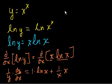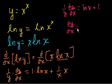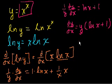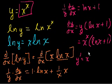Simplifying: we get (1/y)·(dy/dx) equals ln(x) plus 1, since x times (1/x) cancels to 1. Multiplying both sides by y, we get dy/dx equals y times (ln(x) plus 1). Substituting back y equals x to the x, we get dy/dx equals x to the x times (natural log of x plus 1), which we can also write as x to the x times ln(x) plus x to the x.